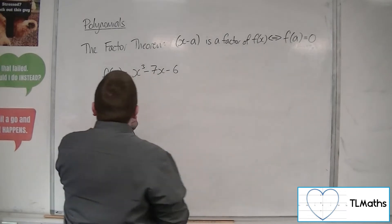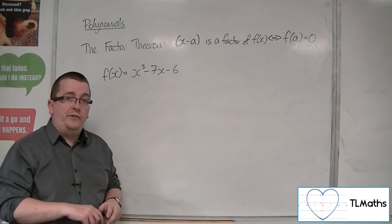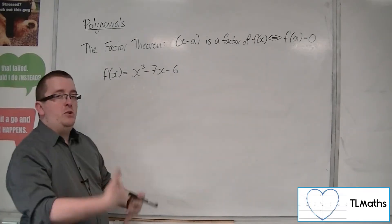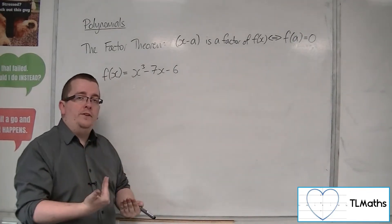So let's say I've got this function here. f of x is equal to x cubed minus 7x minus 6. What I would do is I would substitute numbers in, and if I got 0, then I know that I've found a factor.